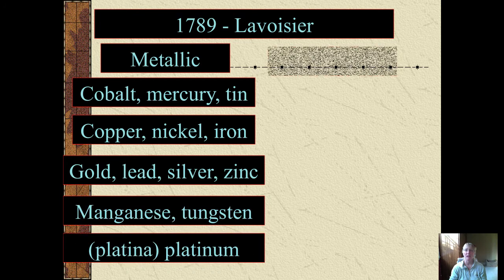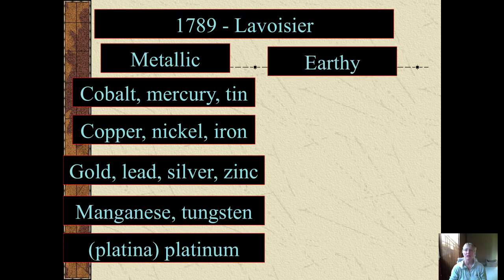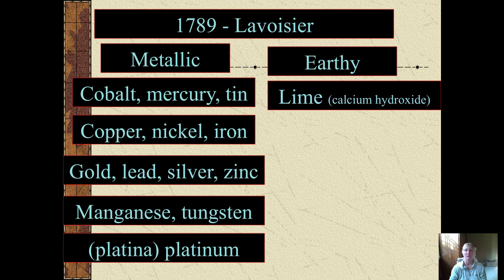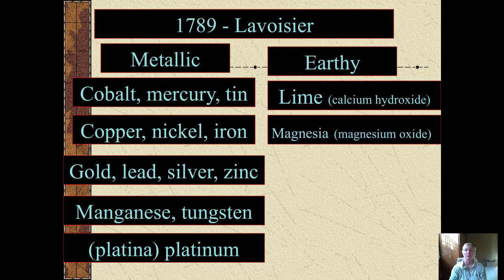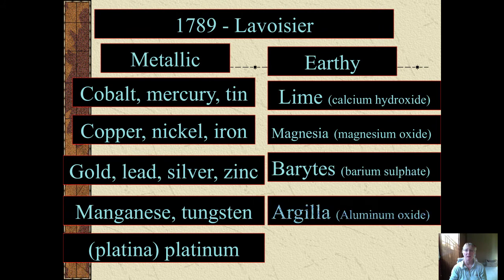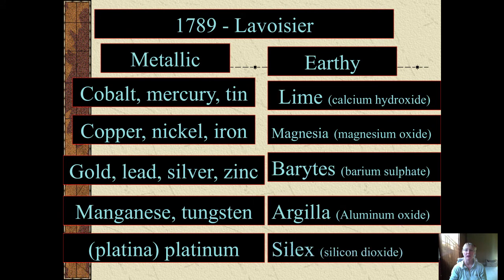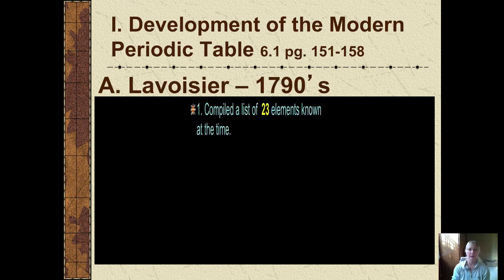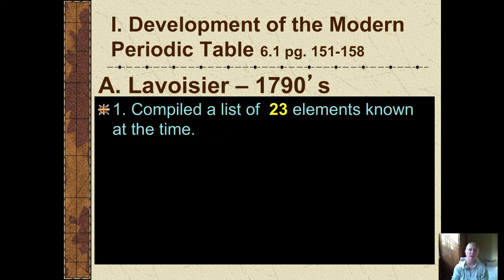He also had a category that he called 'earthy,' and if you notice, these are really what we now know to be compounds — a lot of them compounds of the alkaline earth metals like calcium hydroxide or magnesium oxide. So Lavoisier compiled a list of 23 known elements at approximately the late 1700s.